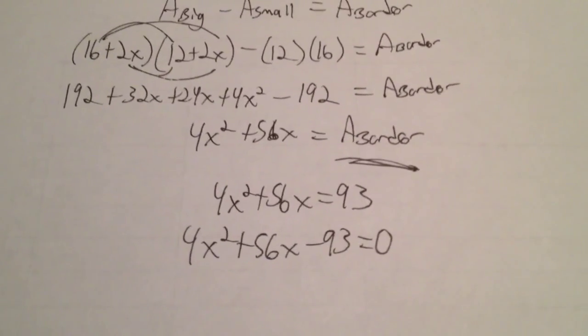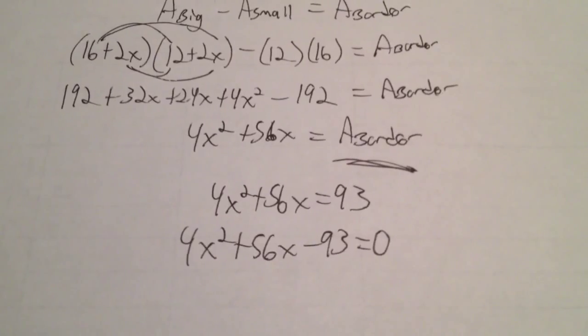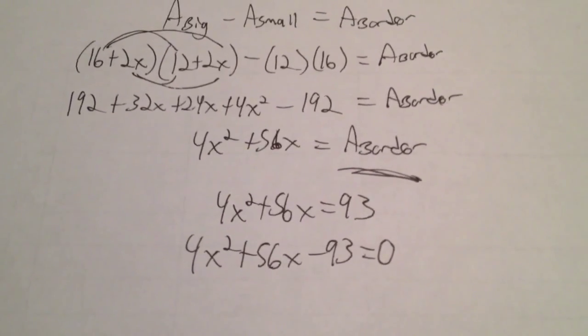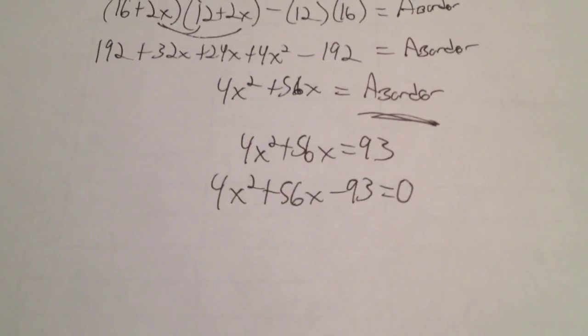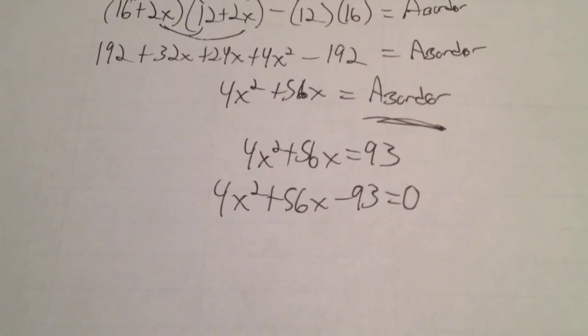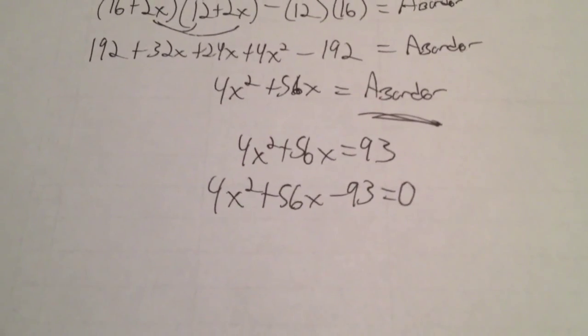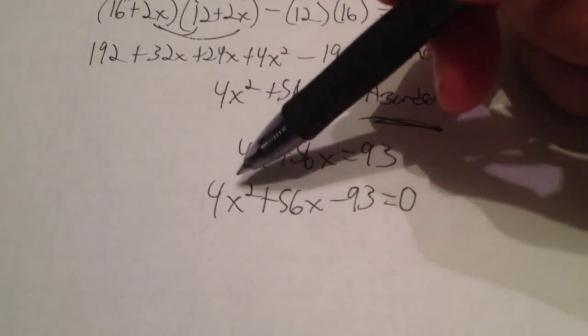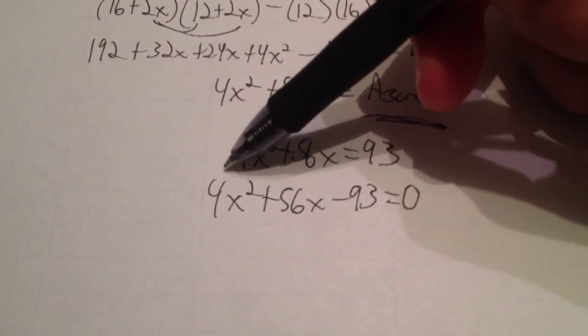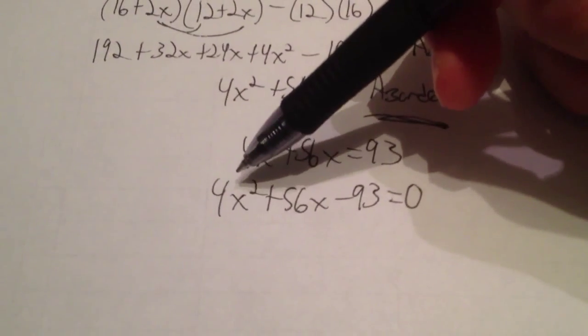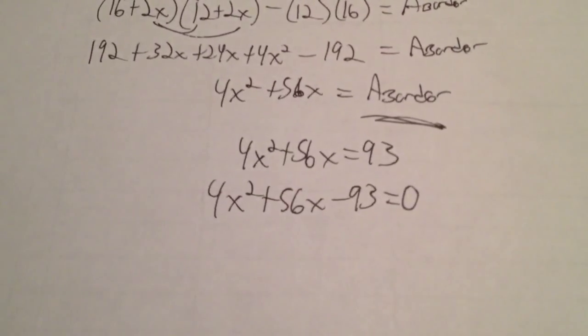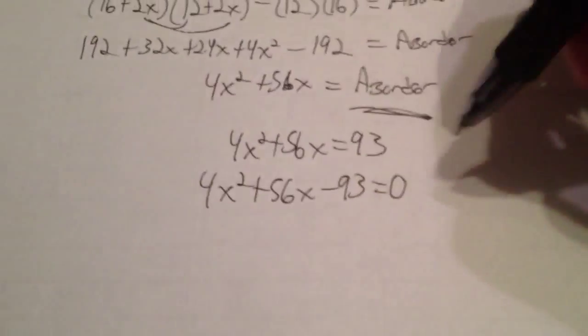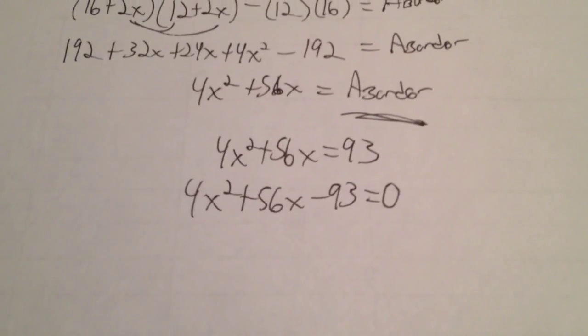Now earlier part of the chapter we solved a lot of these using factoring because we had the ability to do that and that was all we had the ability to do with solving. We also know a couple of other methods now, completing the square or the quadratic formula. Notice that this is a 4x² and so as soon as I see that I'm going to try factoring first and then I'm going to try probably the quadratic formula. In this case because those numbers are so ugly I would probably go straight to the quadratic formula.